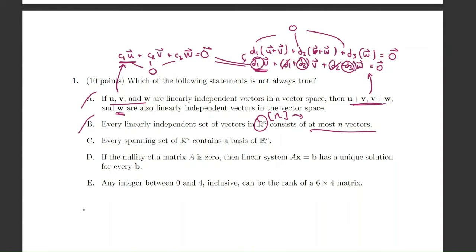Part c: every spanning set of R^n contains a basis of R^n. This makes sense because if you're trying to span a vector space, you need a basis that covers all possible vectors in R^n, and so the basis will span the entire vector space. This is true.